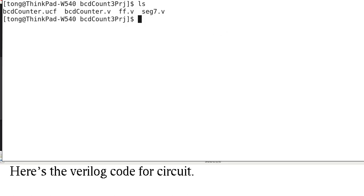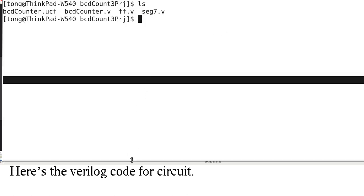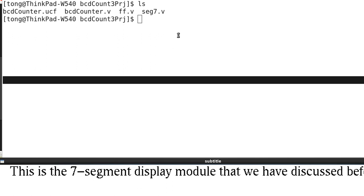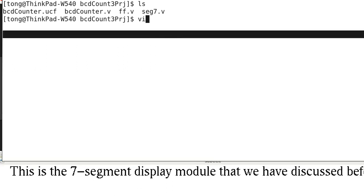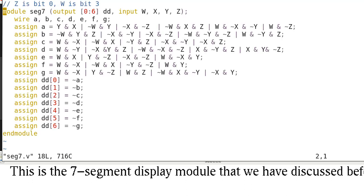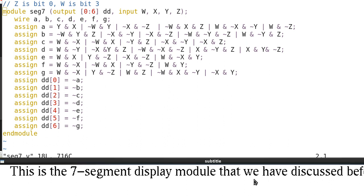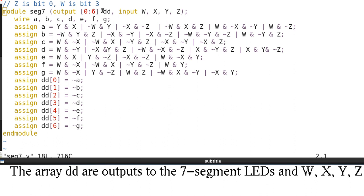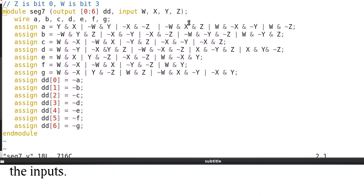Here is the Verilog code for the circuit. This is the 7-segment display module that we have discussed before. The array DD are outputs to the 7-segment LEDs and WXYZ are the inputs.